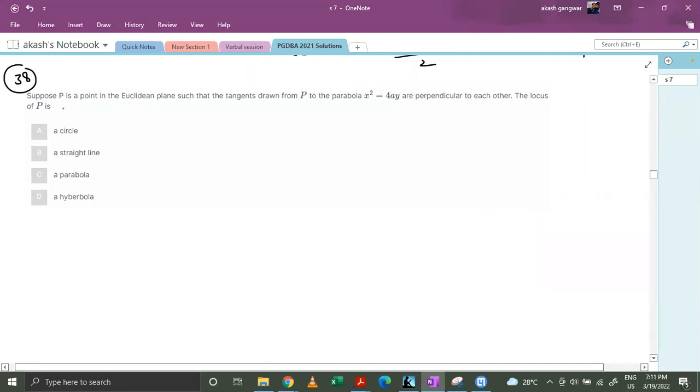Let's discuss question number 38. Suppose P is a point in the Euclidean plane such that tangents drawn from P to the parabola x square equals 4ay are perpendicular to each other. The locus of P is.